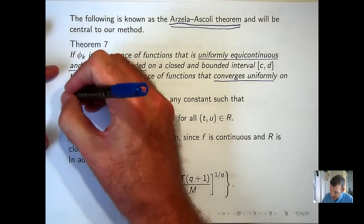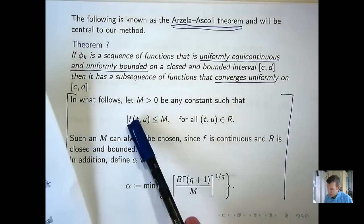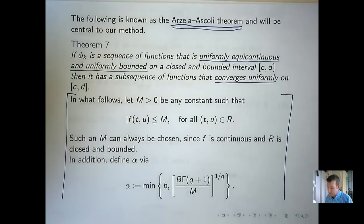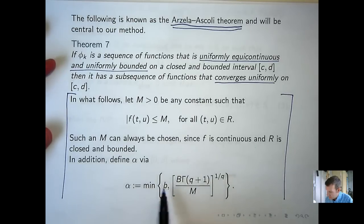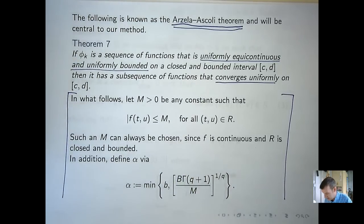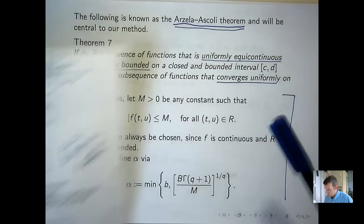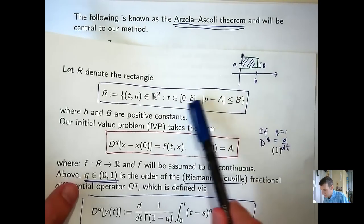In what follows, let M be any constant such that the right-hand side F of our differential equation satisfies a bound on the rectangle R. Since R is closed and bounded and F is continuous, we can always choose such an M. In addition, I'm going to define a number α as the minimum of two values involving the gamma function, the bound M, the fractional order Q, the endpoint b of the T-interval, and the rectangle parameter B.